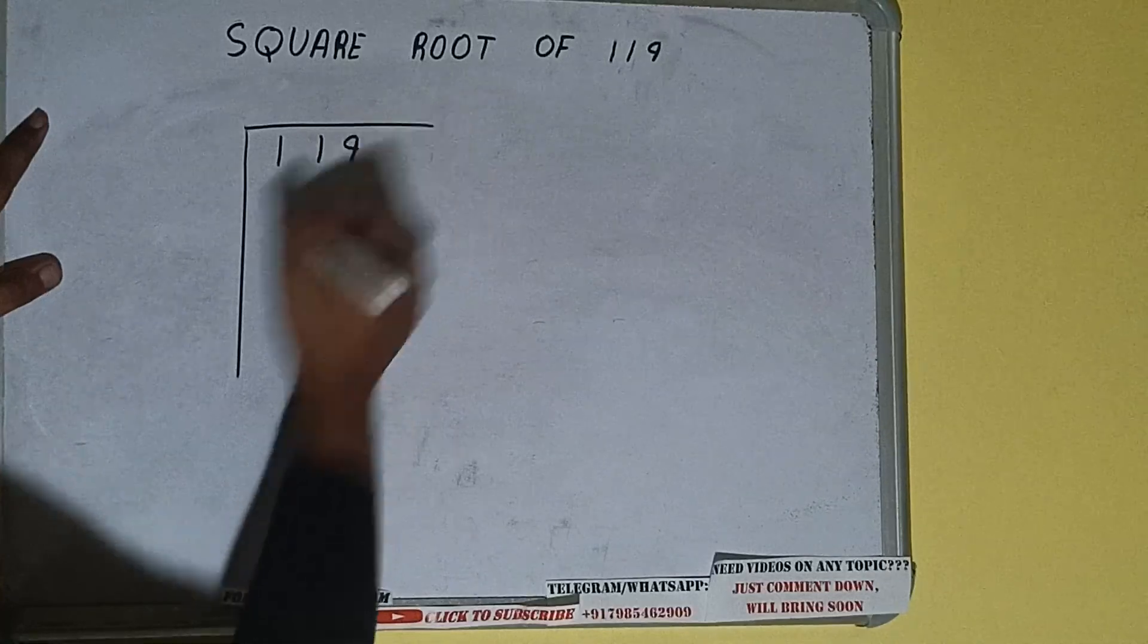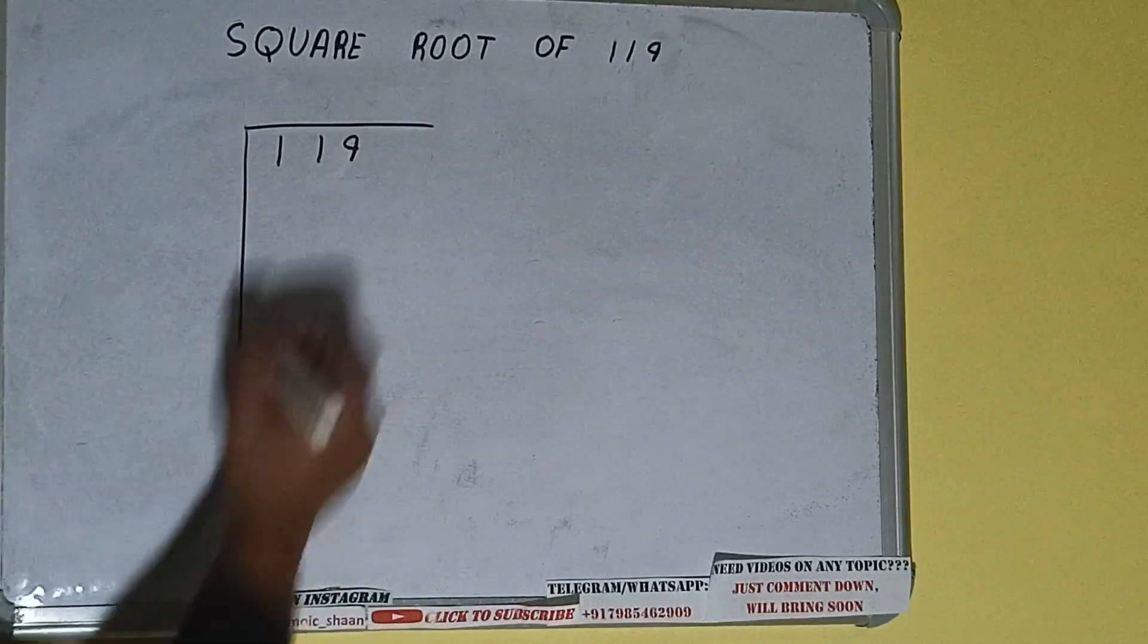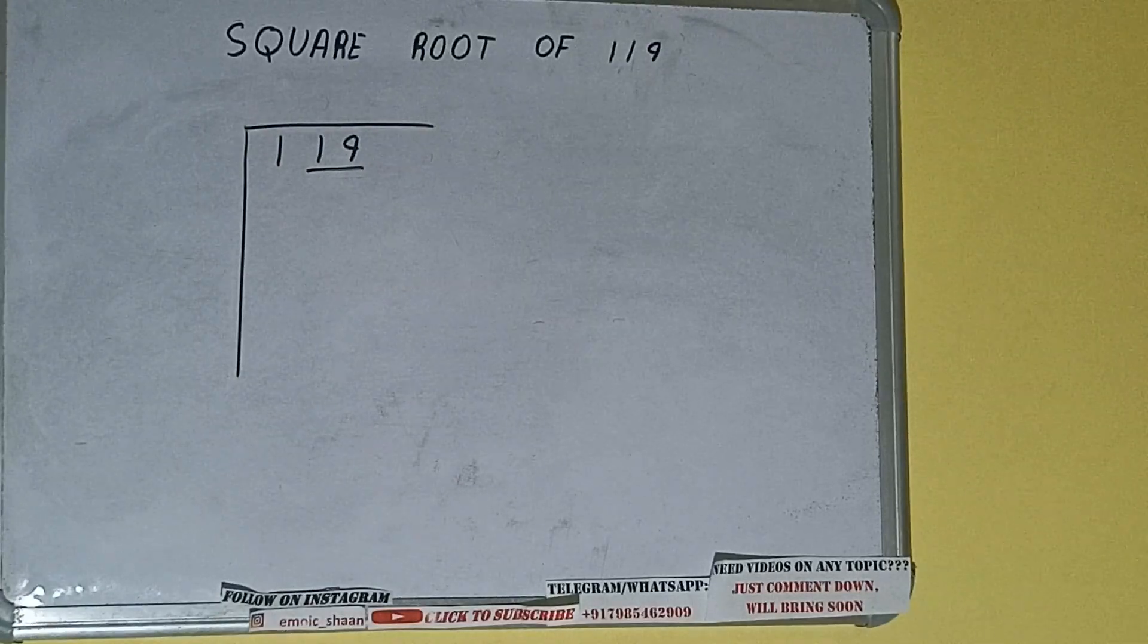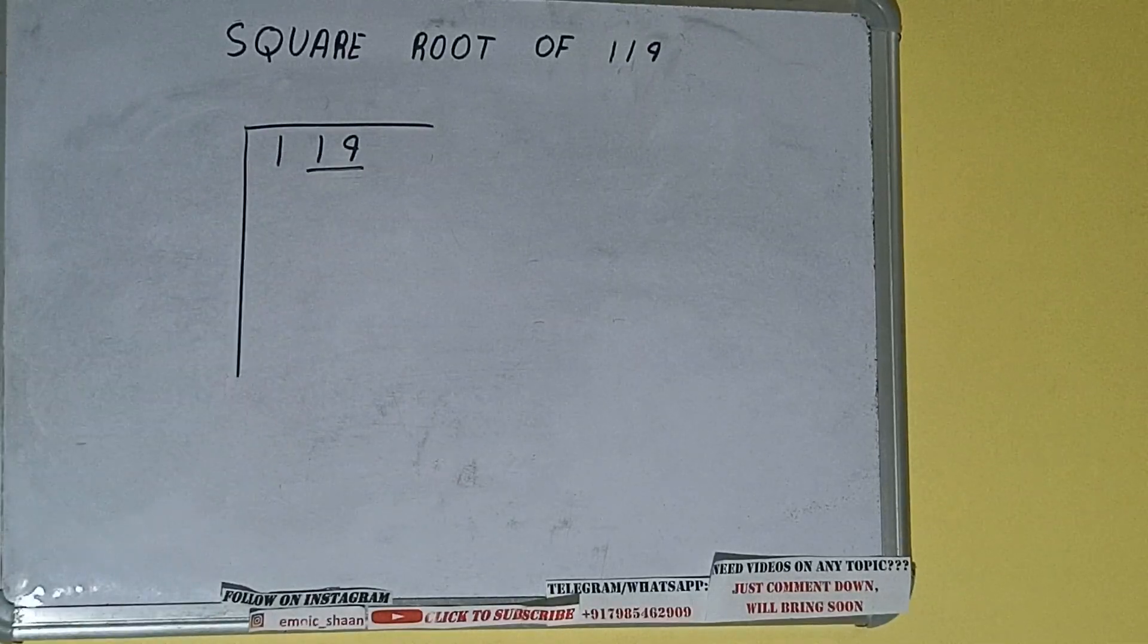The next thing we need to do is form pairs from the right hand side. So one pair will be this and this one will be left out. First we'll divide this one and then we'll bring down the pair.